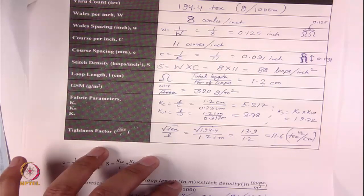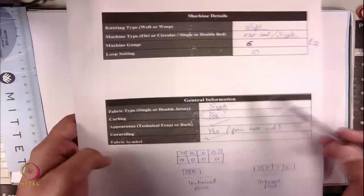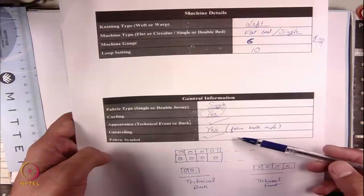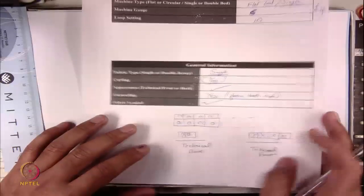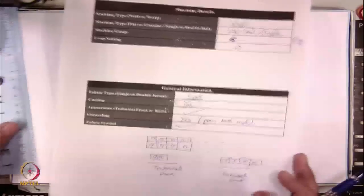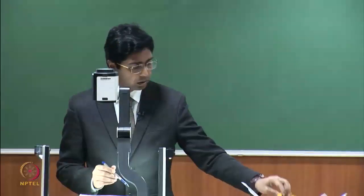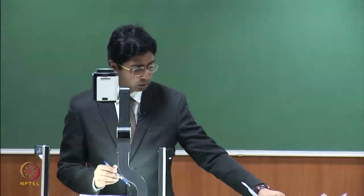The key takeaways from this lab: you should be able to identify what structure you are dealing with, understand on which machines these fabrics are made, and understand the general nature or behavior of the fabric — curling, appearance, its symbol — as well as the basic structural characteristics like thread spacing, GSM, and tightness factor. These are the things you must try to analyze. In the next week, we are going to start with the machines and how we make loops on flatbed machines. I hope to see you very soon. Thank you very much for watching.